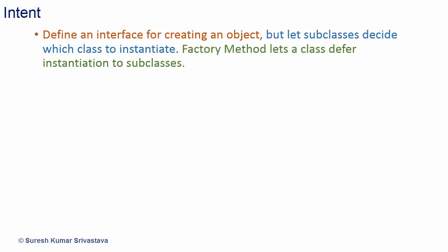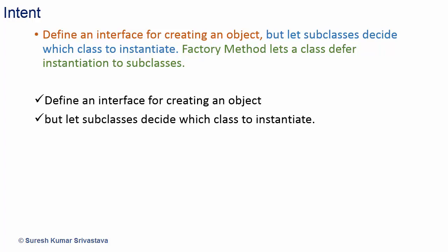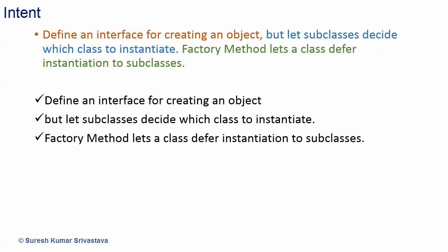So we have three things. Define an interface for creating an object, but let subclasses decide which class to instantiate. Factory method lets a class defer instantiations to subclasses.